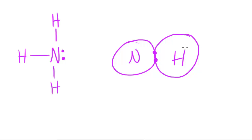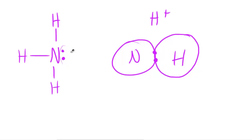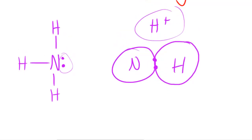The reason why this happens is because H+ ions are really, really positive, and the lone pair of electrons are quite negative. If you remember from ionic bonding, bonds are caused by the attraction between oppositely charged ions. In this case, the positively charged H+ ion is attracted to the negative lone pair of electrons, and when they come together they form a covalent bond just like the other covalent bonds.